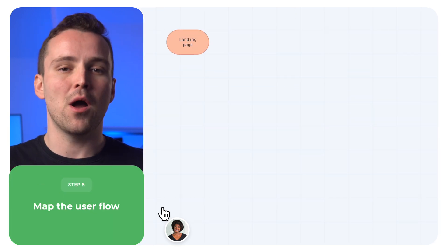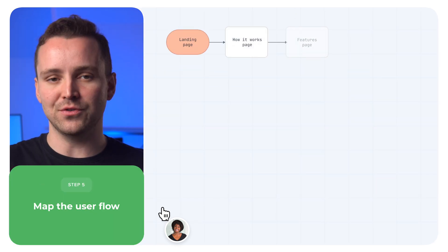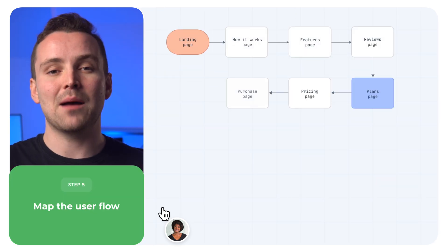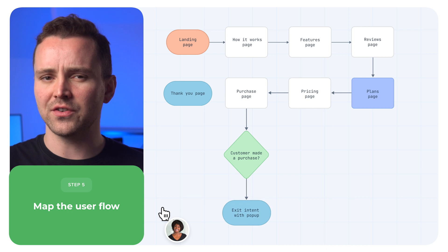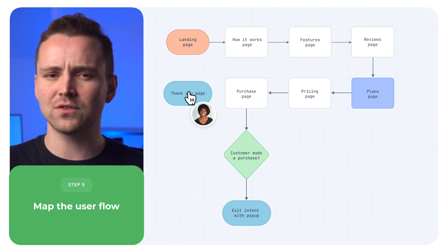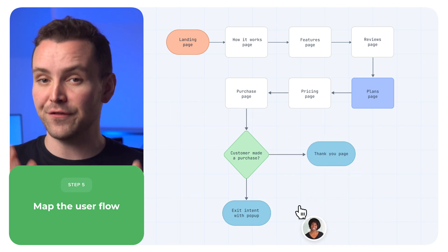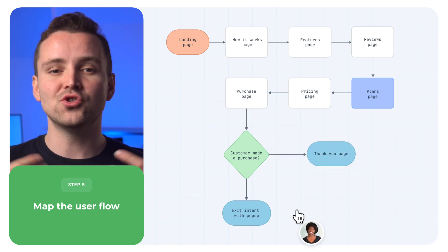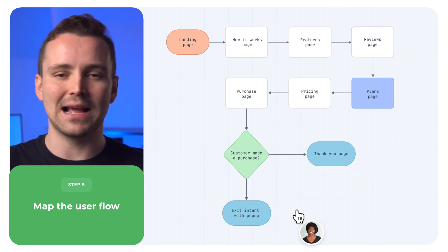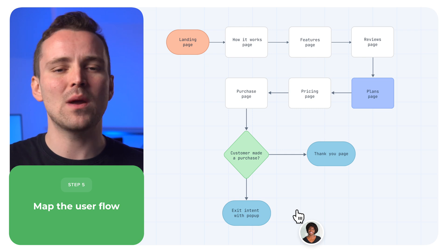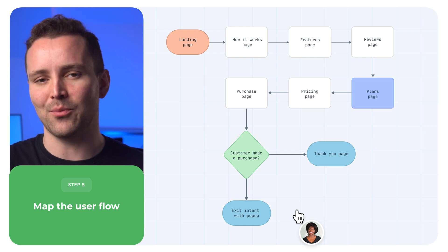Step 5: Map the user flow. Once you've established a thorough understanding of your users, what they need, and how they're finding you, jump into SlickPlan and drag and drop your way to a perfect pathway.